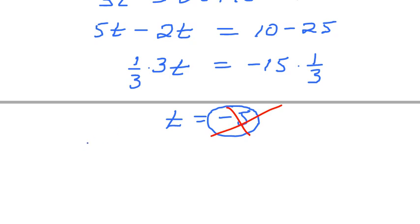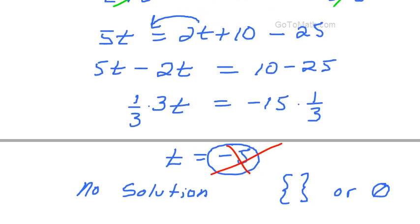So this has no solution. No solution. And of course, we could write it out like this. This is an empty solution set. There's no solution in our set. Or we could denote that symbol right there. It means empty set. You can say no solution. You could say this. You could say empty set. The set is empty.